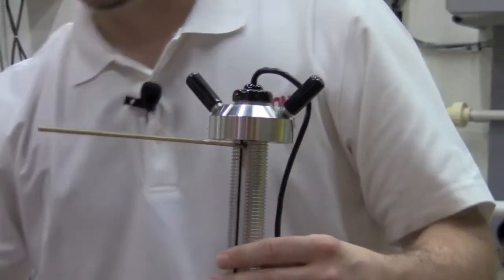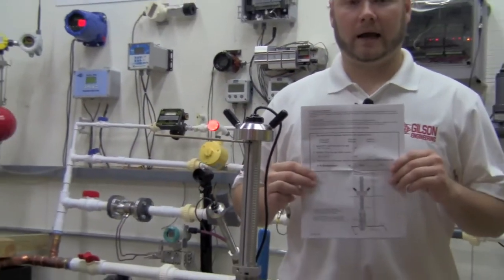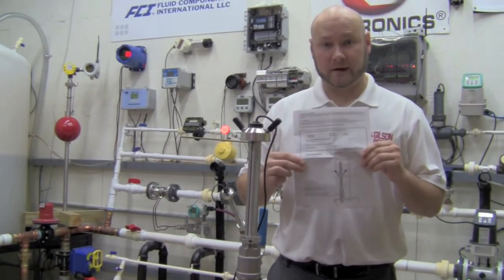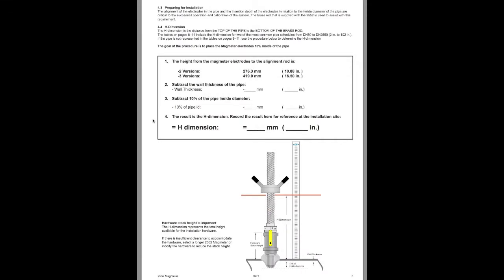Now we're going to go to page five of the manual that came with your 2552. Once you have opened up your user manual, refer to page number five. This will provide you the calculations for determining your H dimension. Your H dimension will be the insertion depth of the meter.